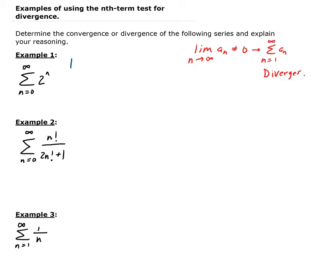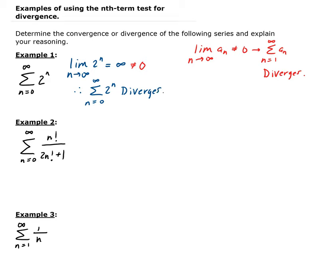For the first one, we have the limit of 2 to the n as n approaches infinity. As n approaches infinity, 2 to the n is getting bigger and bigger, so this goes to infinity. Infinity is not equal to zero, so therefore by the nth term test, this series is diverging. So it diverges by the nth term test.